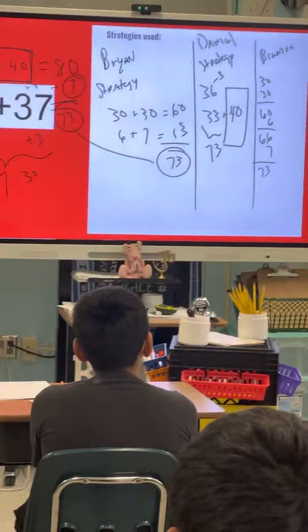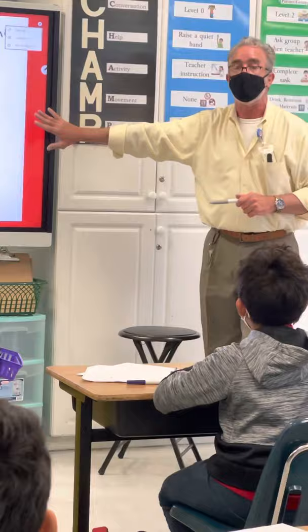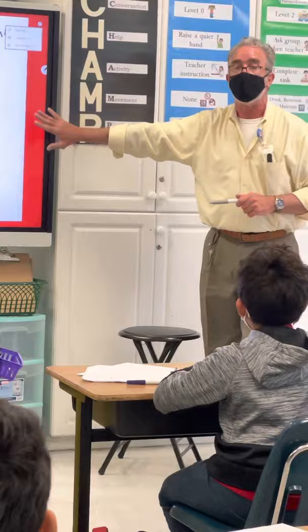I want to share one more strategy before we go to another number. Who has a strategy different than any of these? So, everybody went with this type of strategy. Either rounding up or rounding down. Yes? Yes. Erasure boards, please.